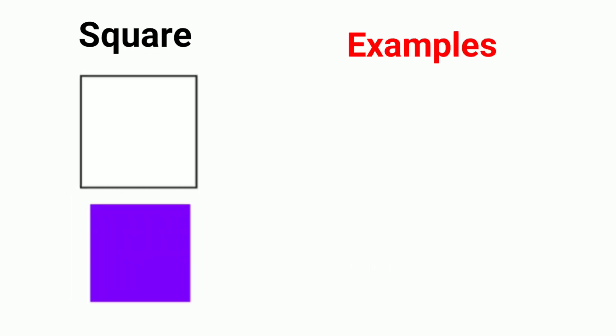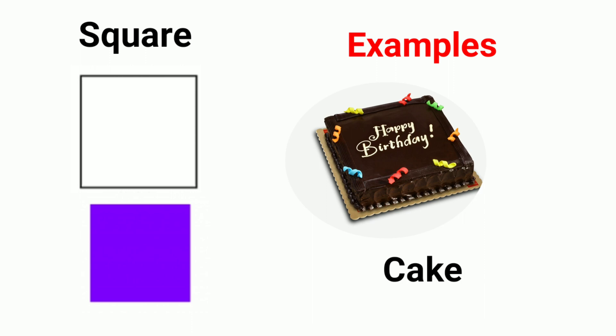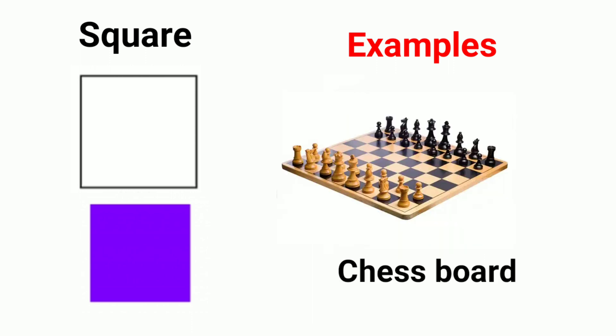Examples of square shapes: cake, pillow, chessboard. Rectangle.